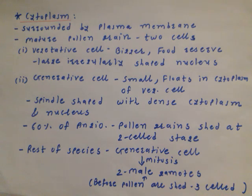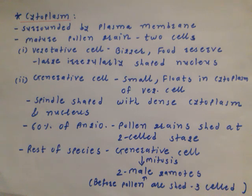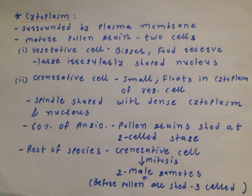Over and above these two layers — exine and intine — the pollen grain shows a cytoplast arrangement surrounded by plasma membrane. In a mature pollen grain, two cells develop: vegetative cell and generative cell. The vegetative cell is comparatively bigger in size. The generative cell is spindle shaped with dense cytoplasm and nucleus, and it floats in the cytoplasm of the vegetative cell.